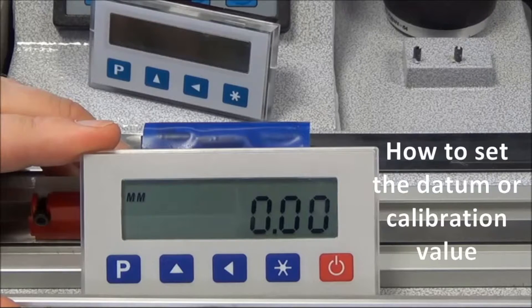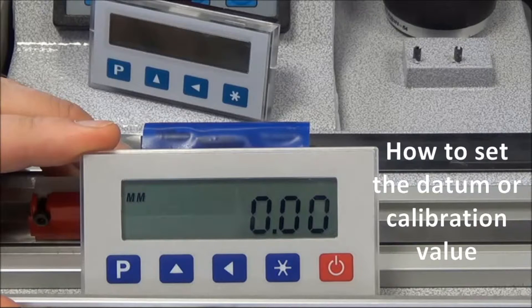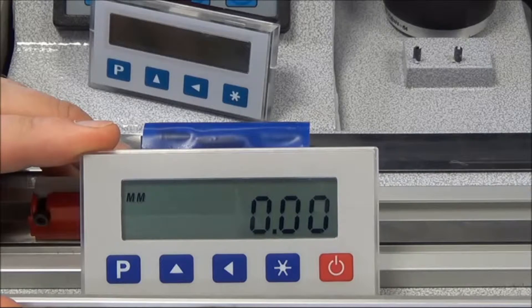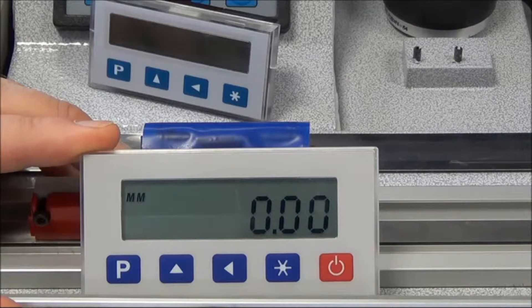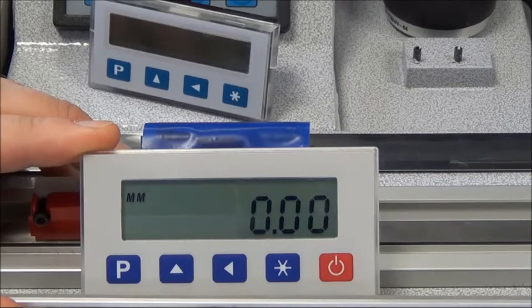How to set the reference, or you could say datum or calibration value, on the machine. We had one customer recently who said he couldn't get the axis to the zero position. This isn't a problem because in his case, he could get it to 10 millimeters and wanted the reference value to be 10 millimeters.